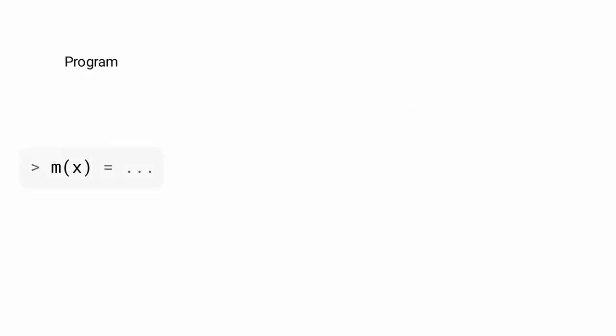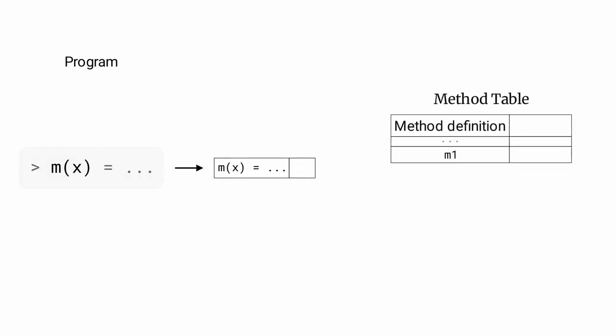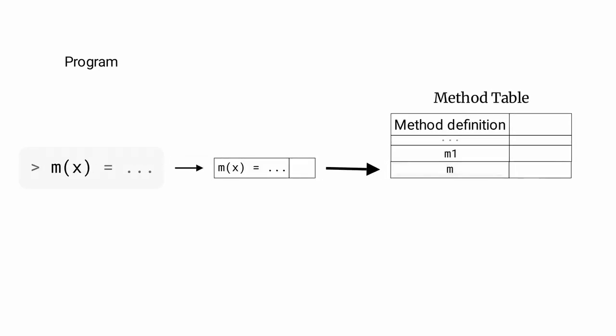In Julia, all function definitions processed during the program execution are stored in a global method table. The term method here refers to a single definition. There is also a global counter called world age, which keeps track of the number of method definitions.